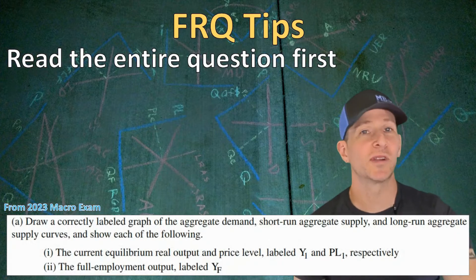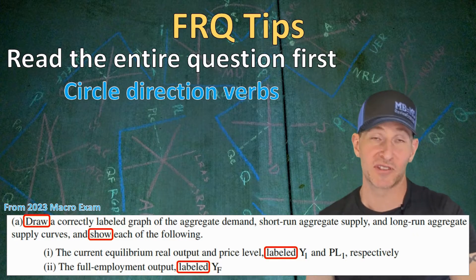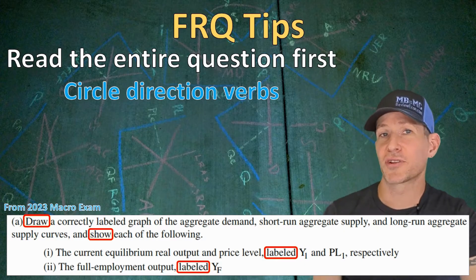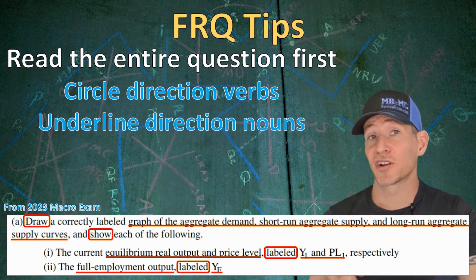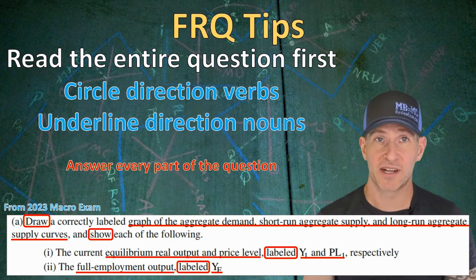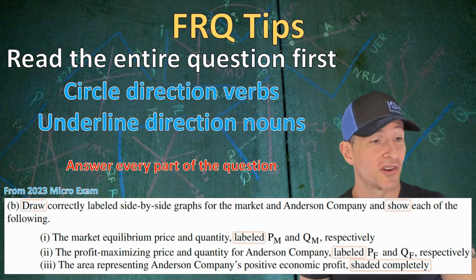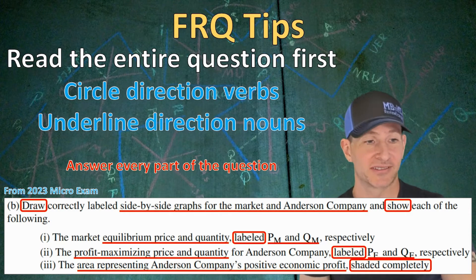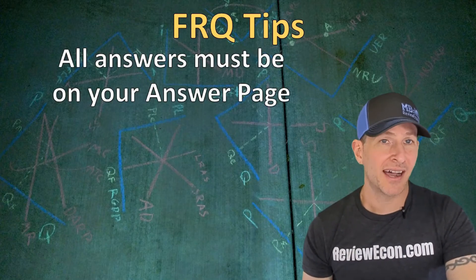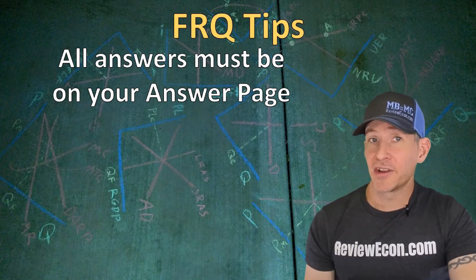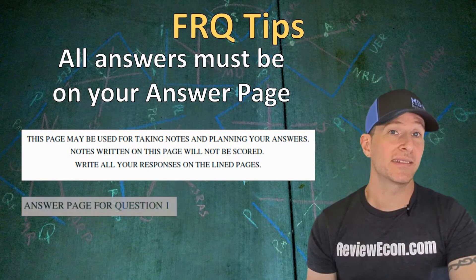When it comes to the free response questions, read the entire question before you start answering. I suggest you circle the direction verbs to understand what the question is asking you to do, and also circle the direction nouns so you know what the verbs are telling you to act on. Marking up your exam like this, and then reviewing those marks before you submit, helps ensure you've answered every part of the question. Make sure your entire answer is written on the answer page — if you write answers on the question sheet, they will not be scored or even looked at by the readers.